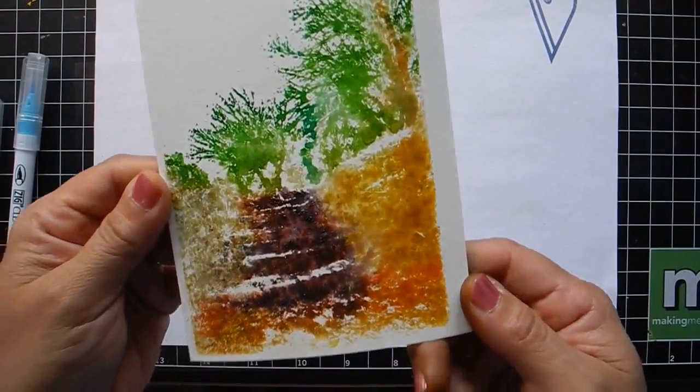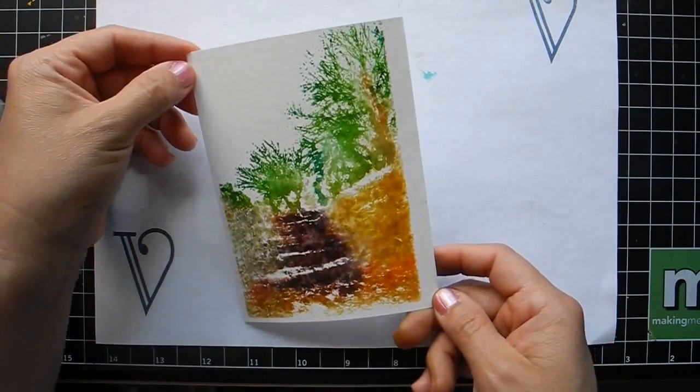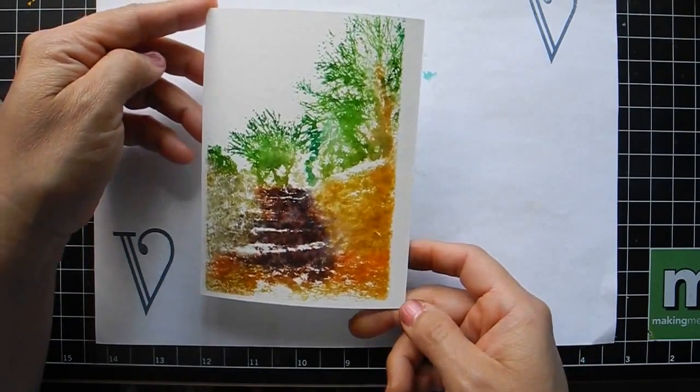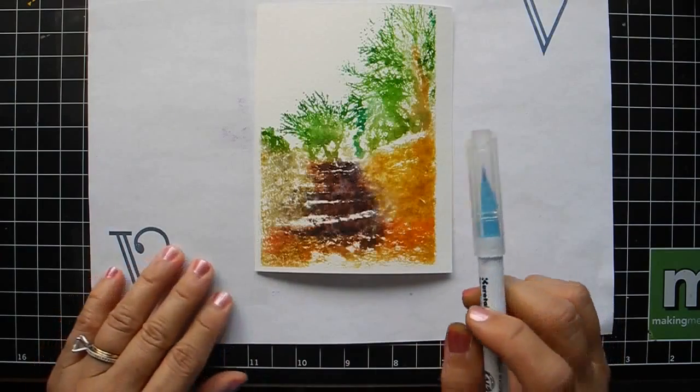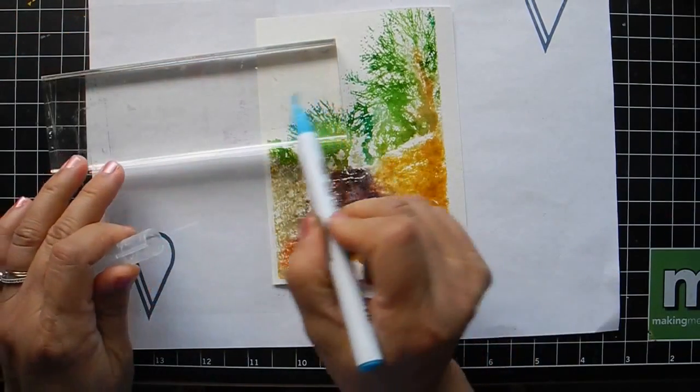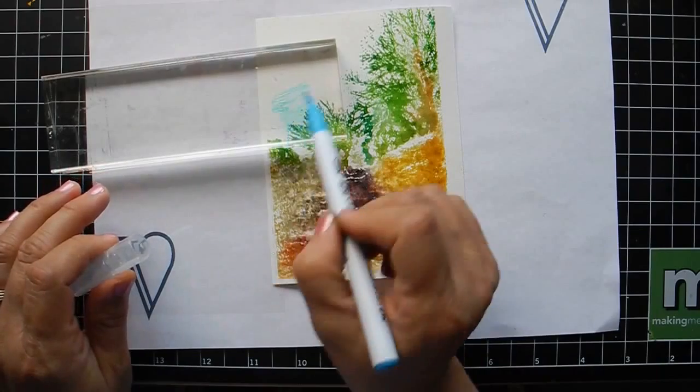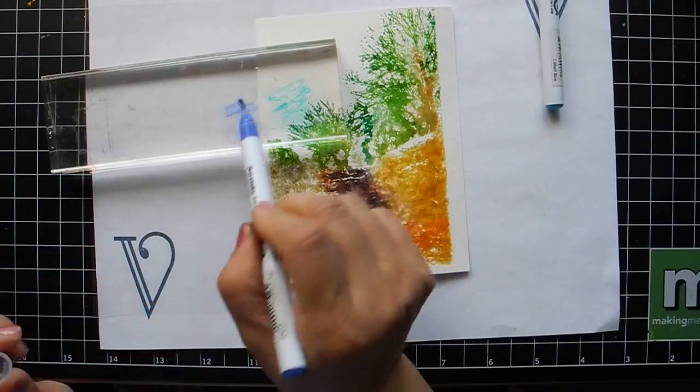After the embossing, it looks like a postcard really. You could stop here or you could continue like I'm doing. And so what I'm going to do is take out Zig marker and I'm going to create the sky color with Zig markers.